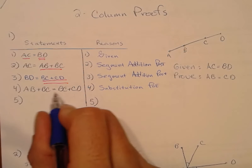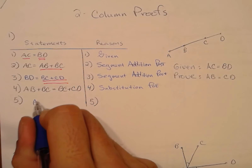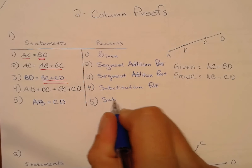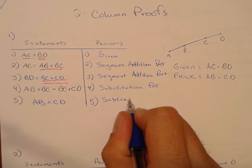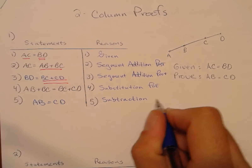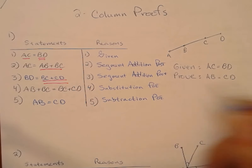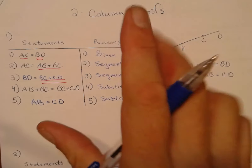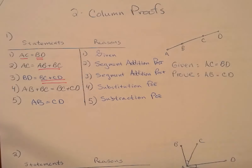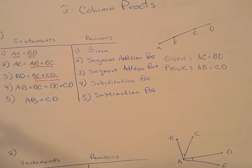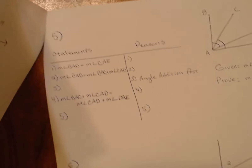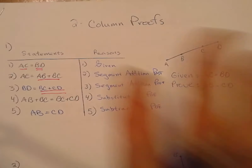Then to go from this equation to what I'm trying to prove, I can just subtract BC from both sides of this equation. When you subtract something from both sides, that is the Subtraction Property of Equality.